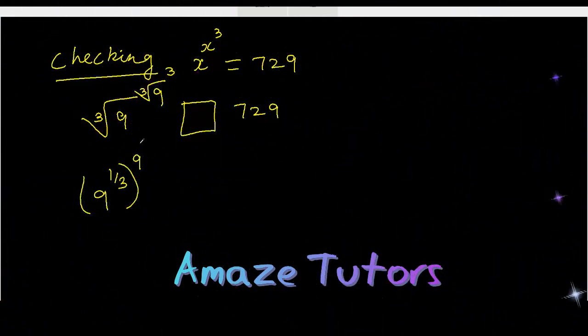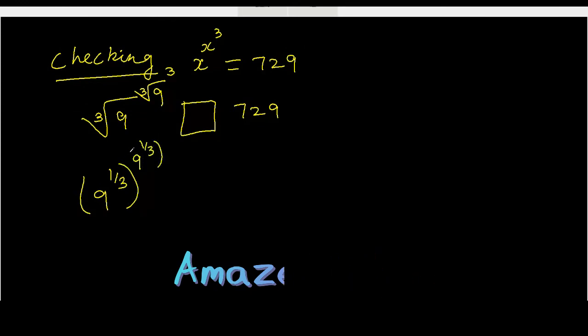Now 9 to the power 1 by 3, whole power 3. Because we converted the radical form to exponent form. This is the radical form. Whenever you want to convert to exponent, the power, this root will go to the denominator.